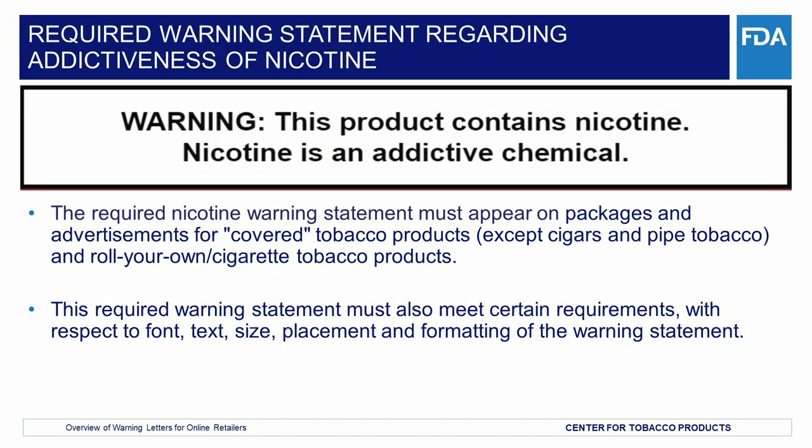A covered tobacco product is any tobacco product deemed under the deeming final rule to be subject to Chapter 9 of the FD&C Act, but excludes any component or part that is not made or derived from tobacco. For example, cigars, liquid nicotine, hookah, water pipe tobacco, and pipe tobacco would be considered covered tobacco products, while vaporizers or pipes that are not preloaded with tobacco or a tobacco-derived substance would not.